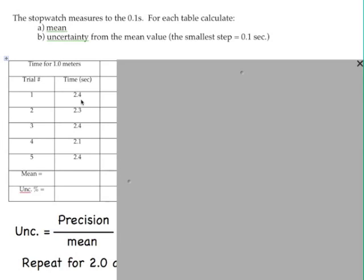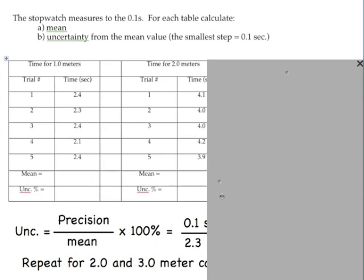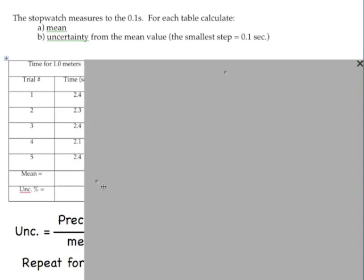You add these up. So you go 2.4 plus 2.3 plus 2.4 plus 2.1 plus 2.4. So you get the sum, and then you divide by the number of samples, and there's 5. So you sum these up, divide it by 5. And let's take a quick peek. I got 2.3 for my mean when you do all that work. We're just going to round to the tenth in this case.